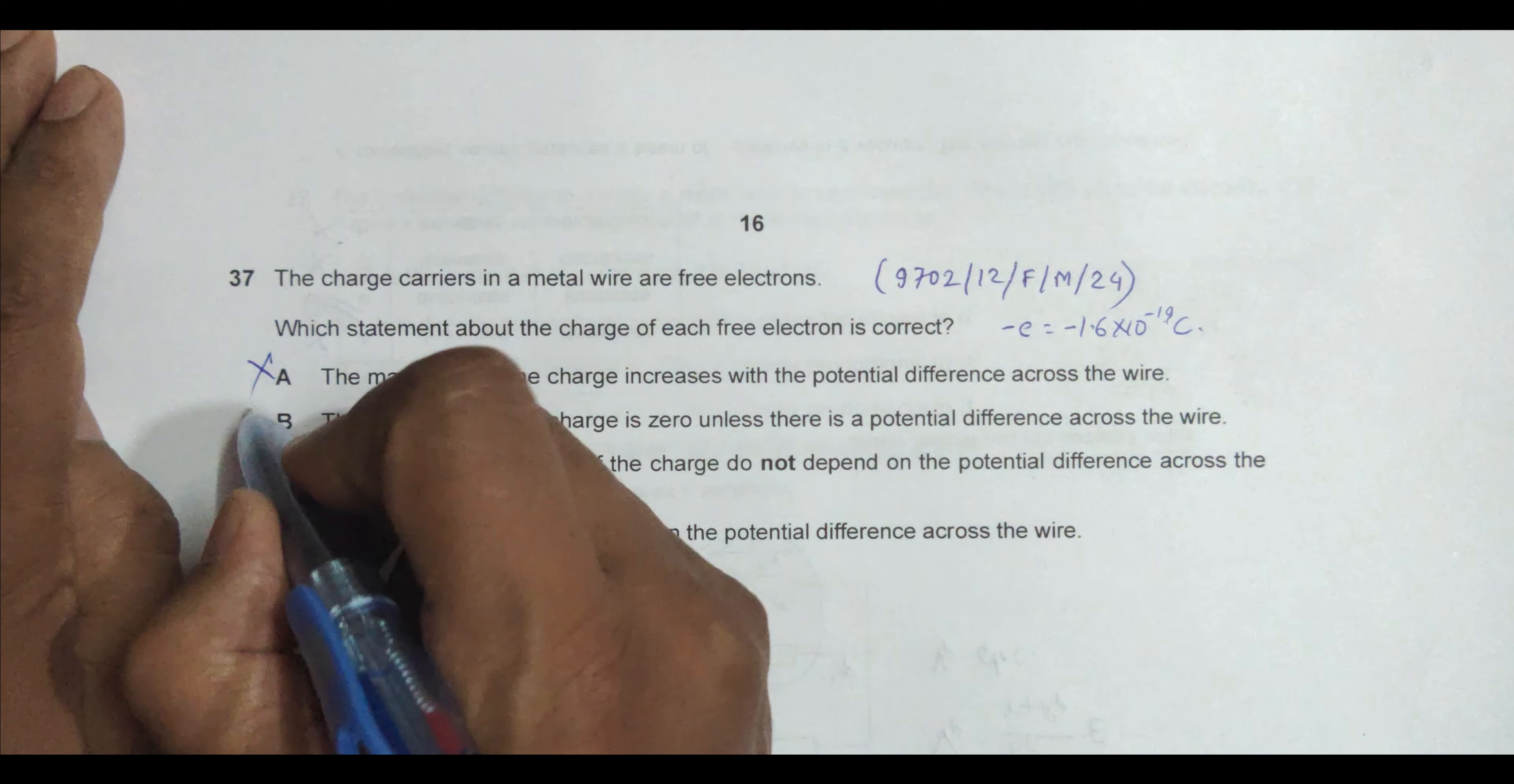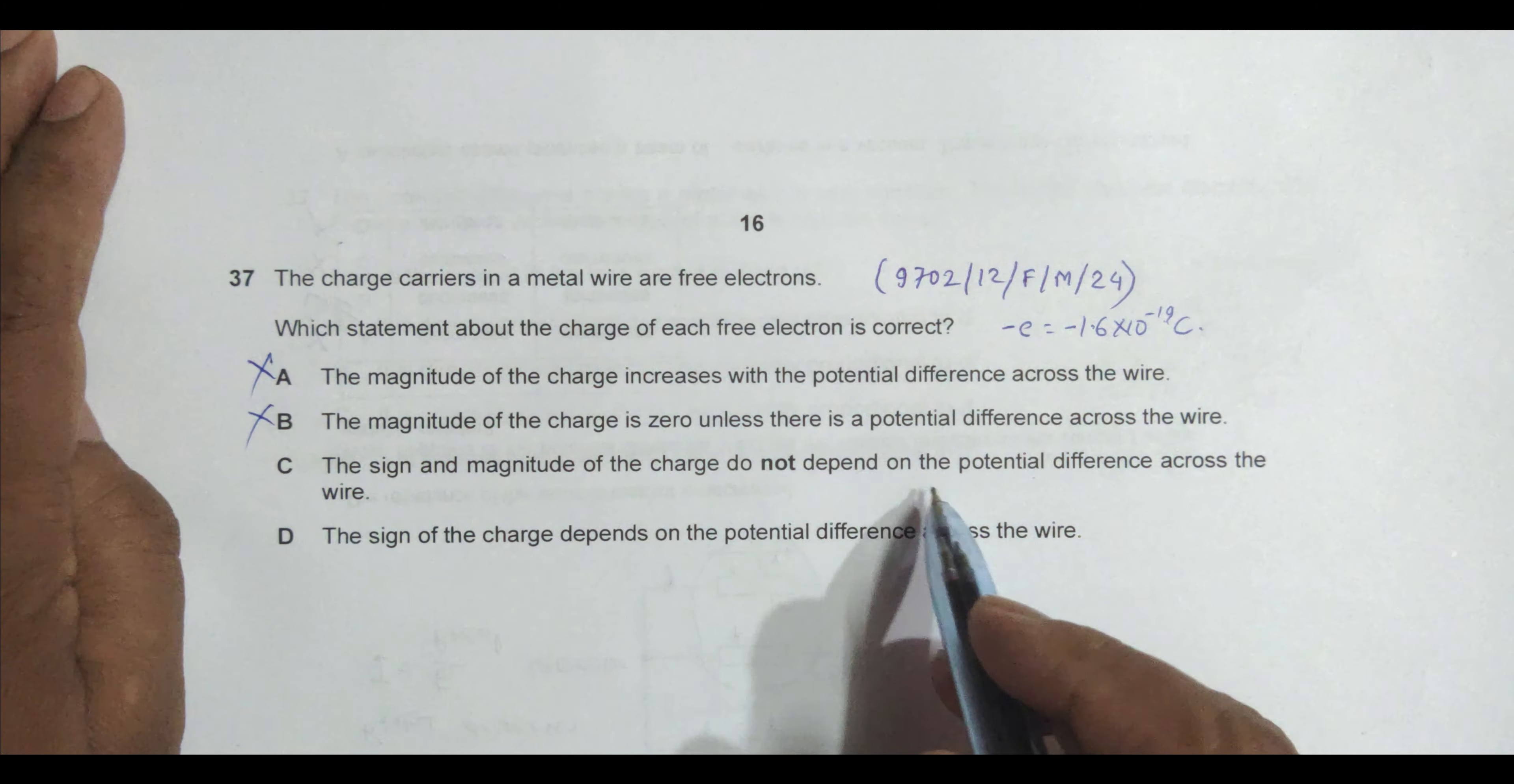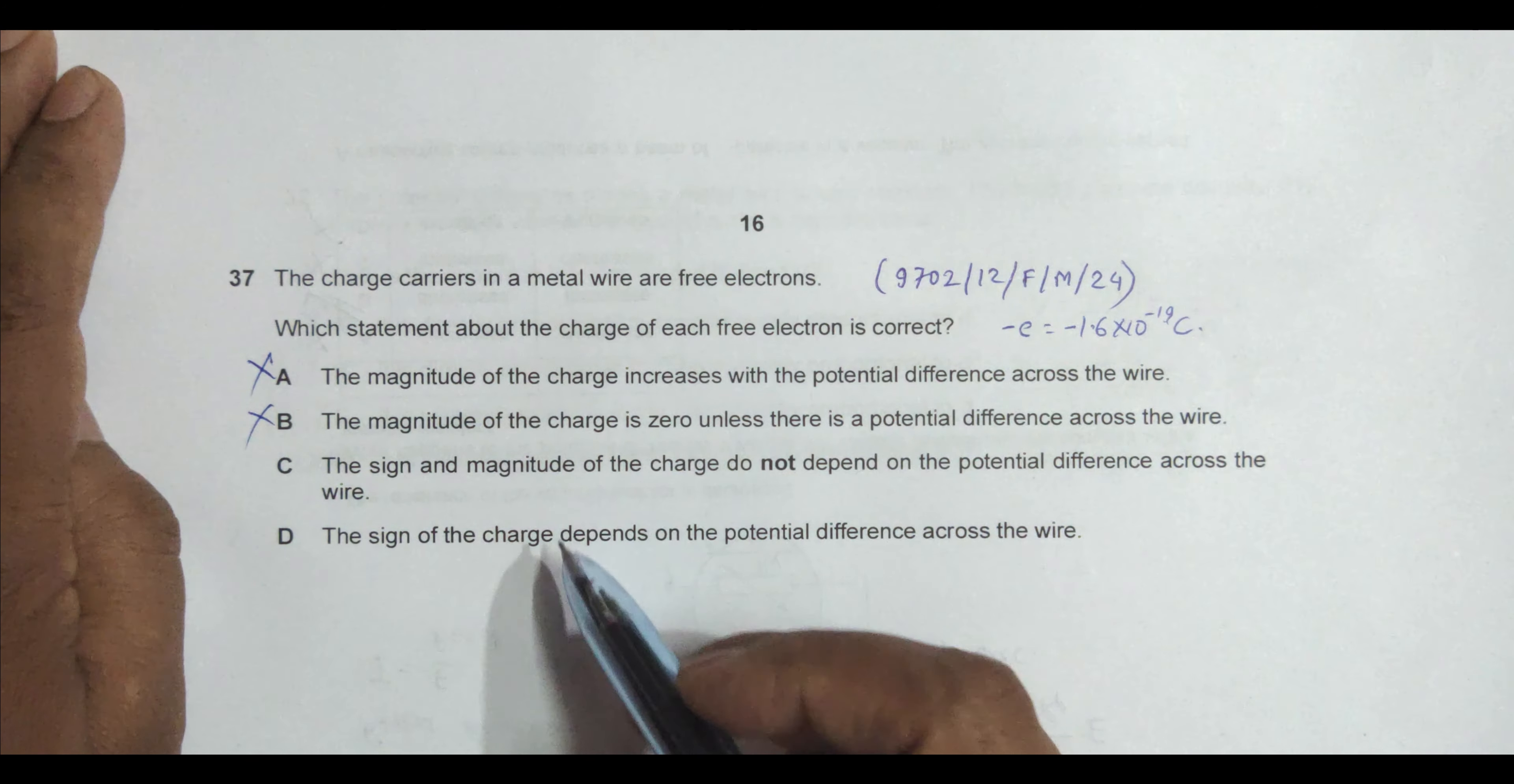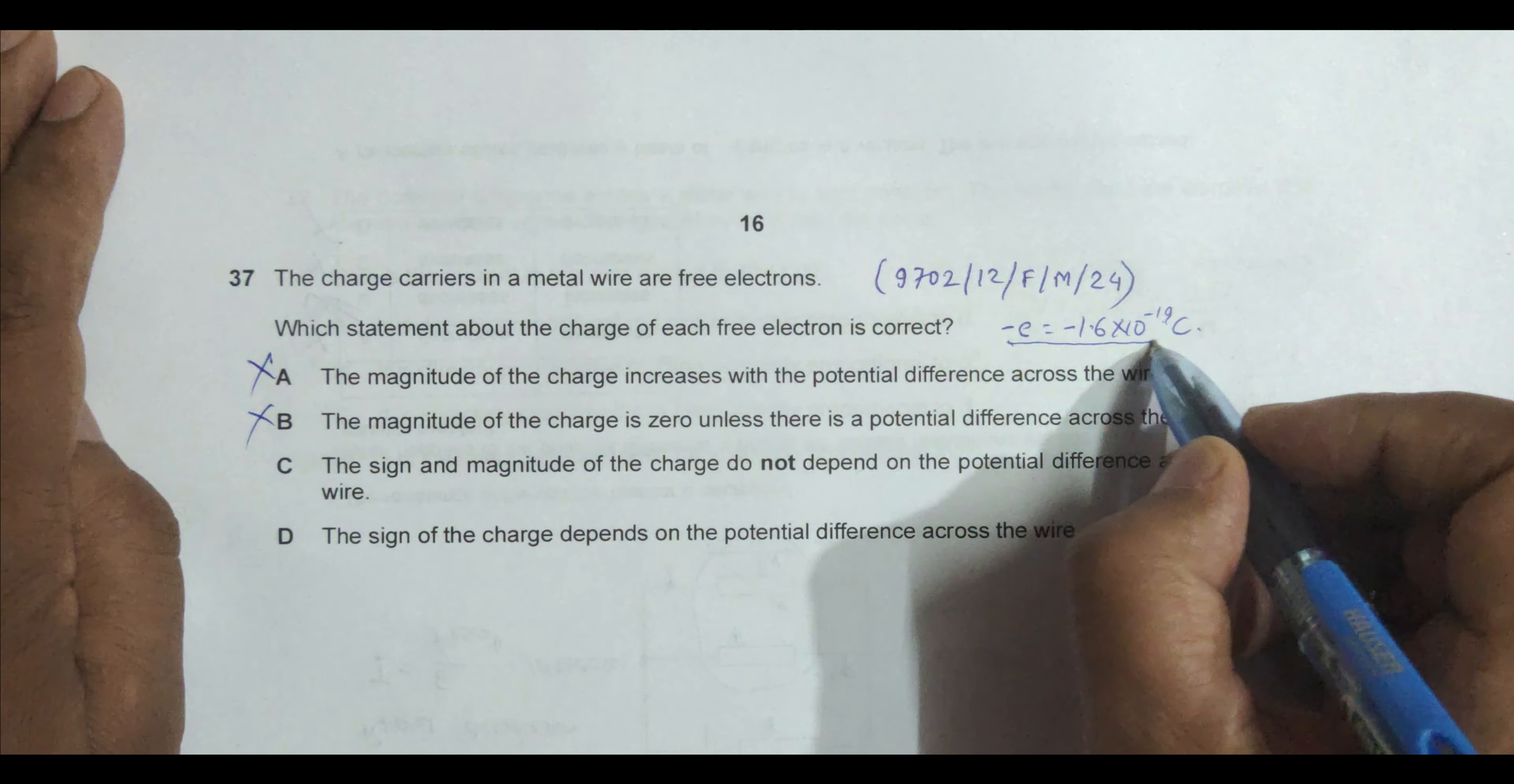Next is the sign and magnitude of the charge do not depend on the PD across the wire. Yes, because its value is this. It doesn't depend on the PD at all, so this is correct.